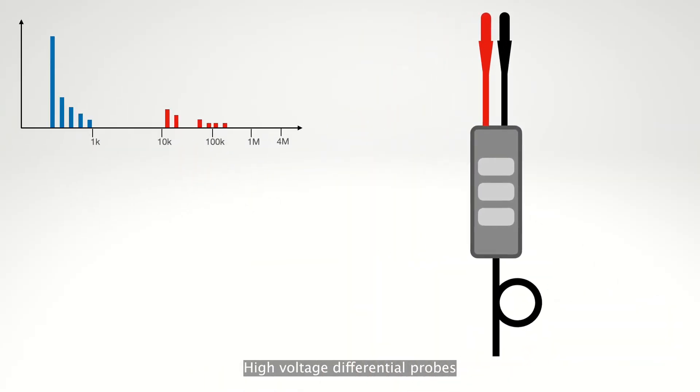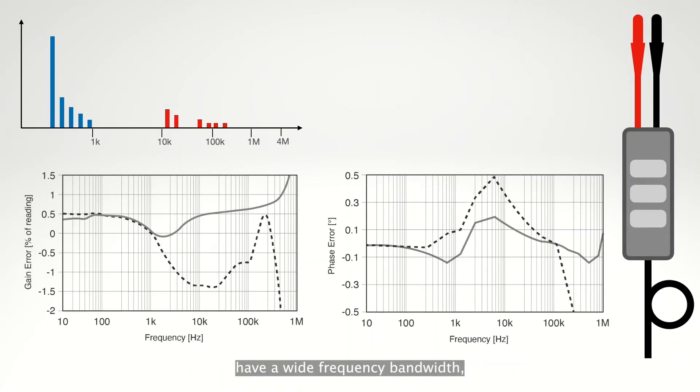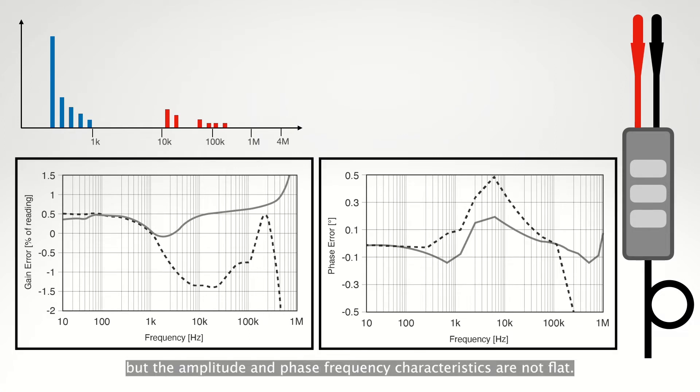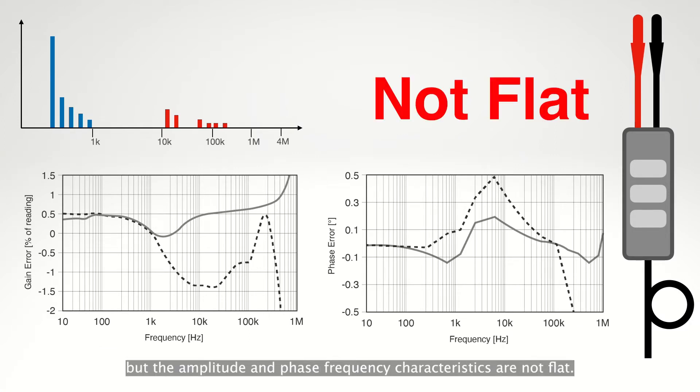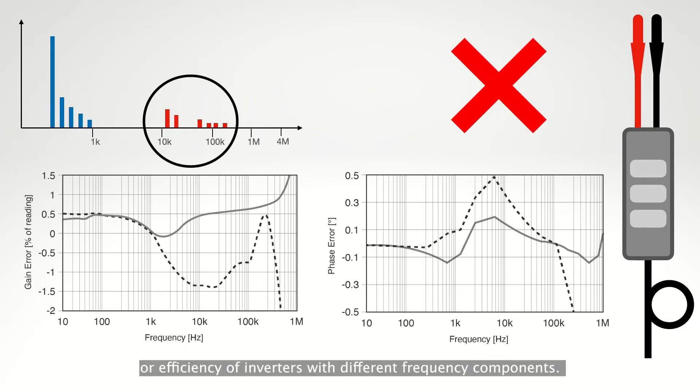High voltage differential probes have a wide frequency bandwidth, but the amplitude and phase frequency characteristics are not flat. Because of this, it is not possible to accurately measure the output power or efficiency of inverters with different frequency components.